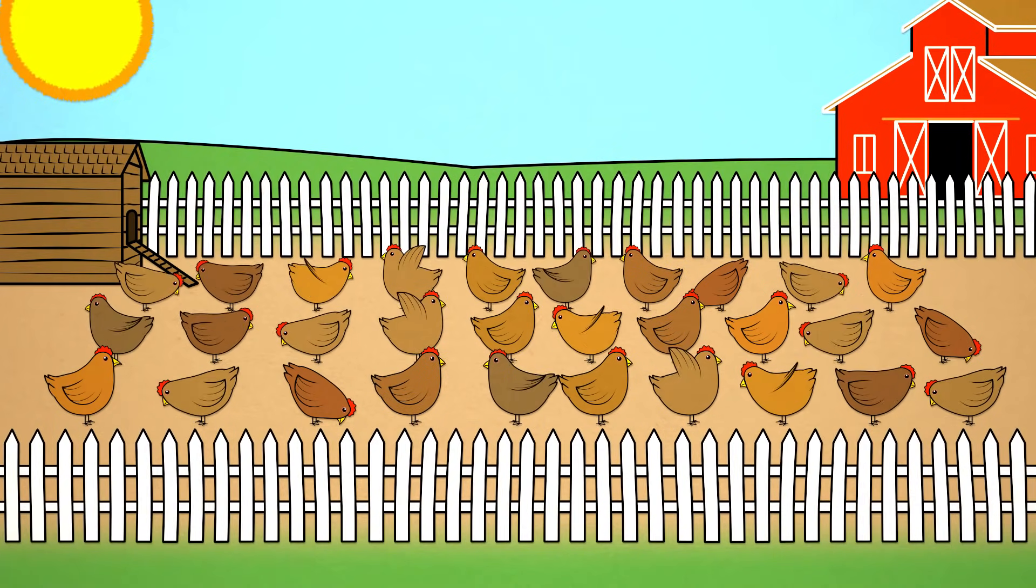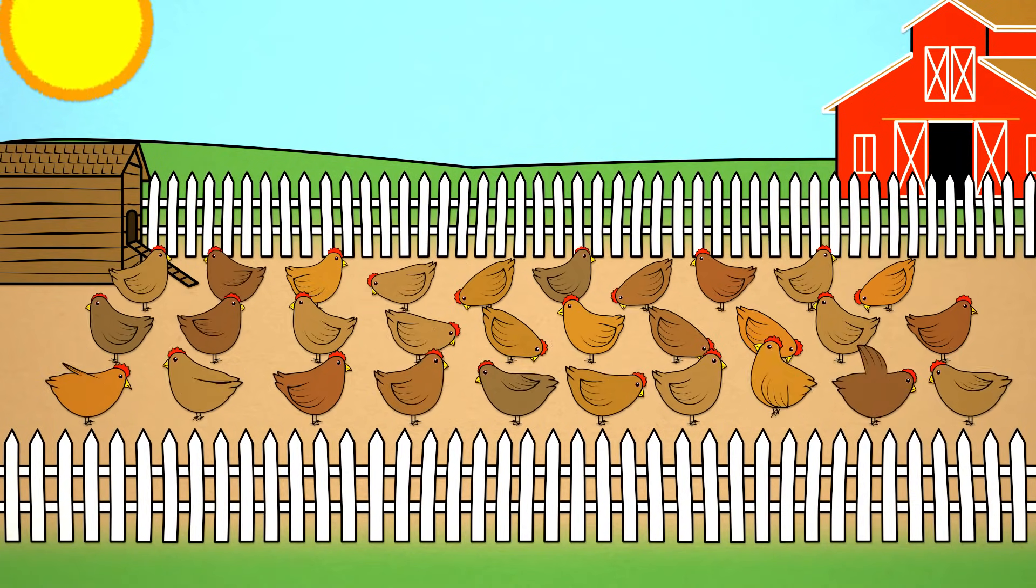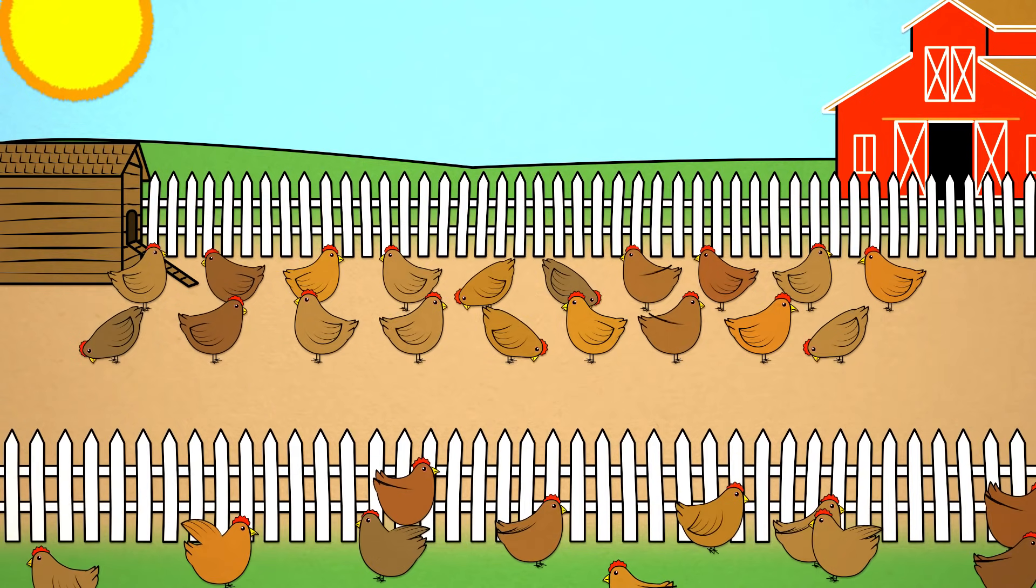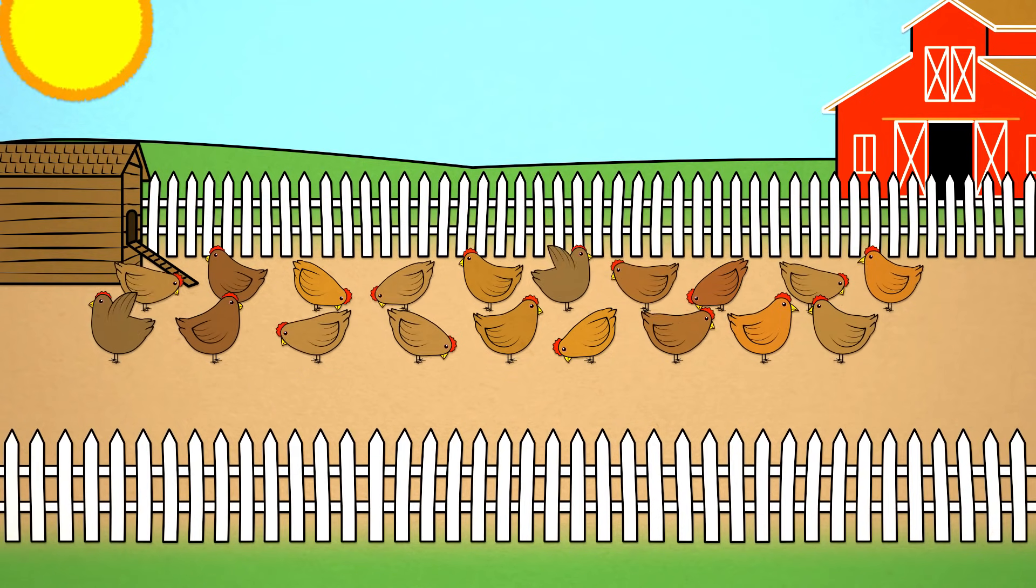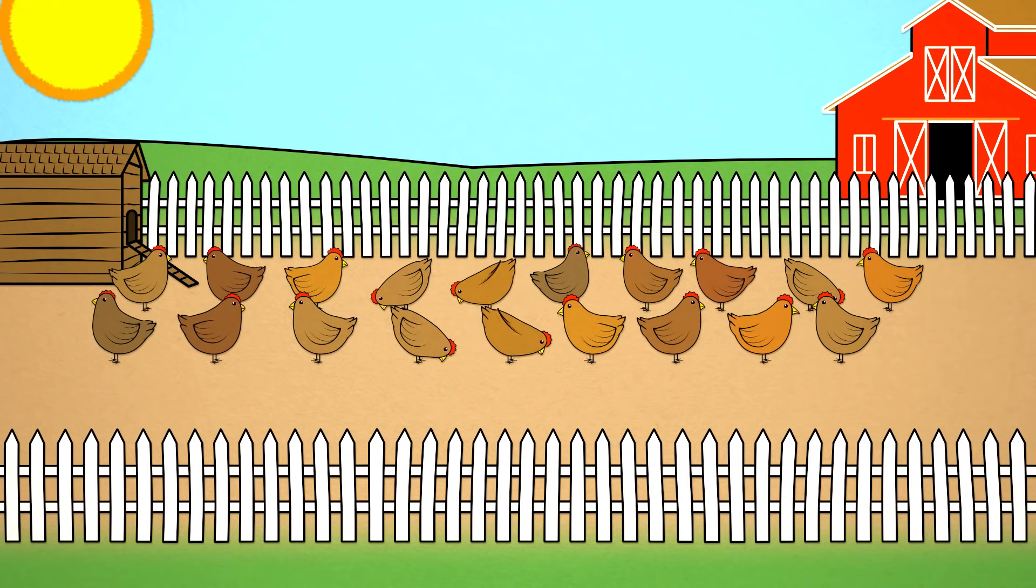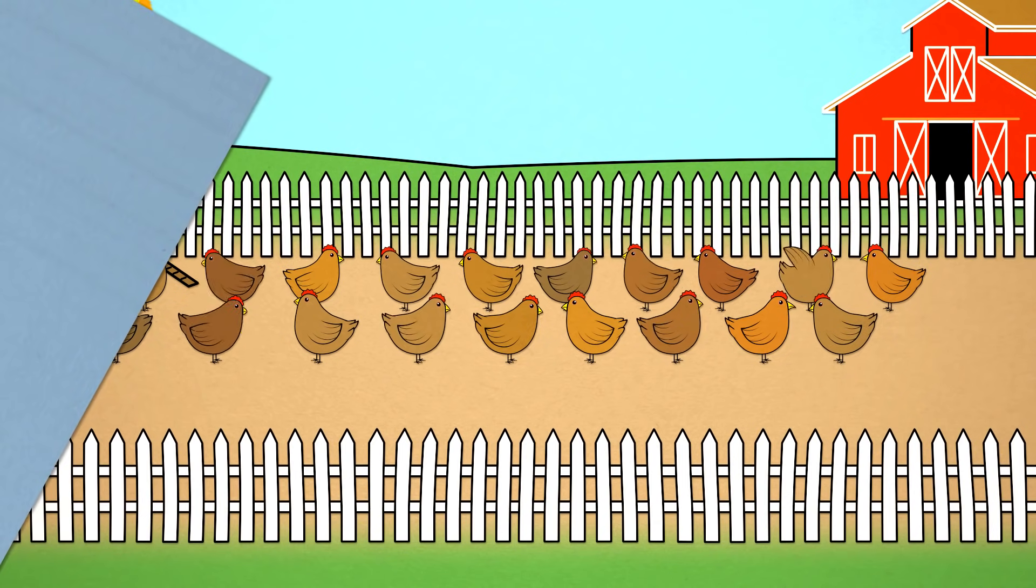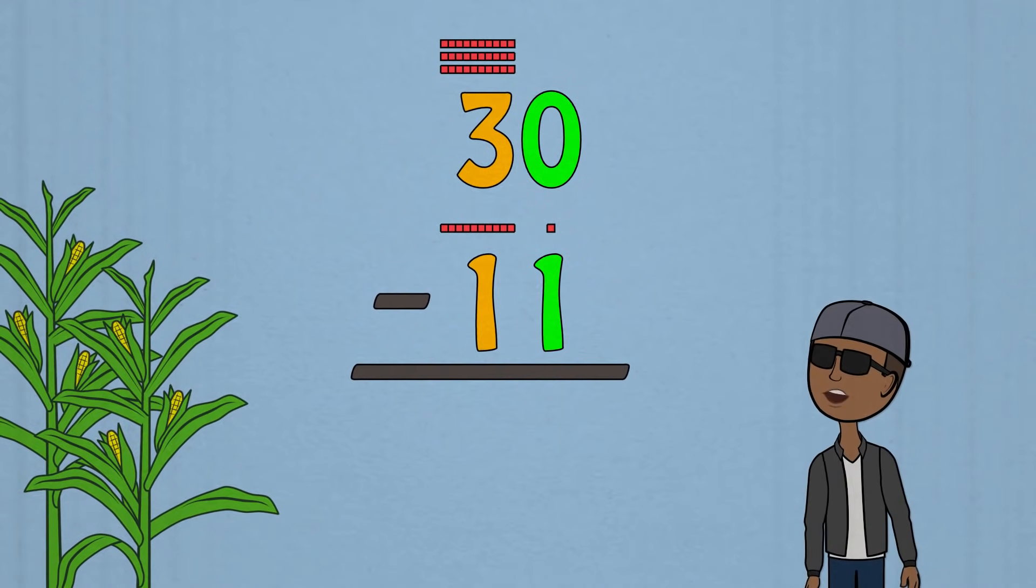30 hens were hanging in that chicken pen. 11 of them suddenly jumped over the fence. How many hens remain in the pen? To figure out the difference when you subtract, I say zero minus one can't be done because the top number is smaller than the bottom one.